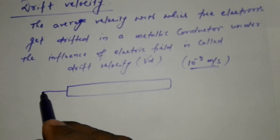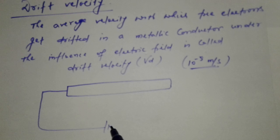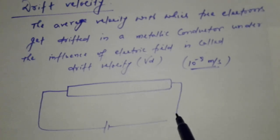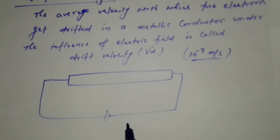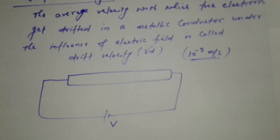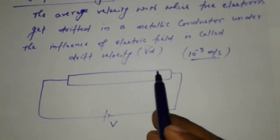First we draw a closed circuit. This is potential difference when we have a conducting wire.